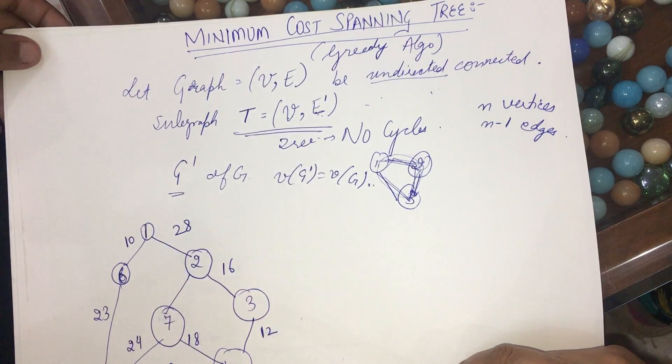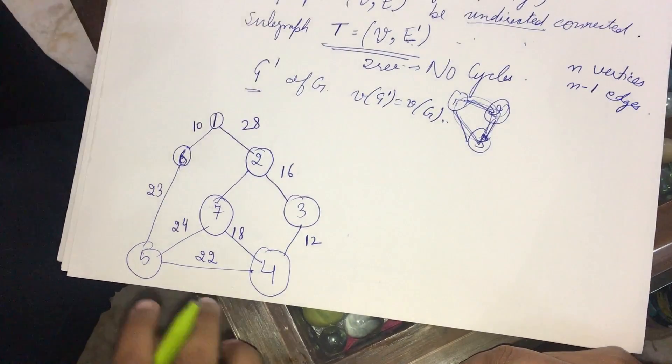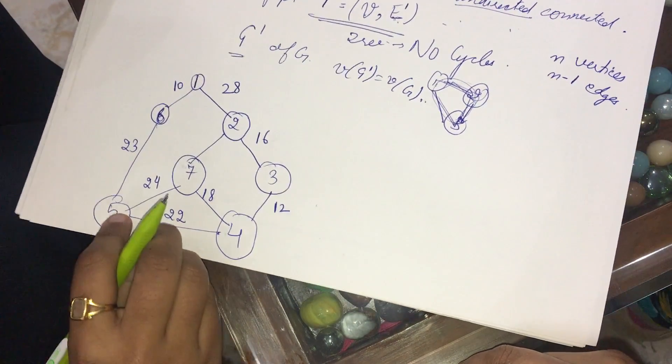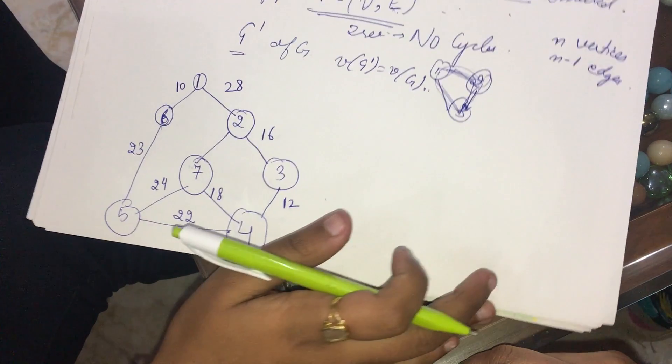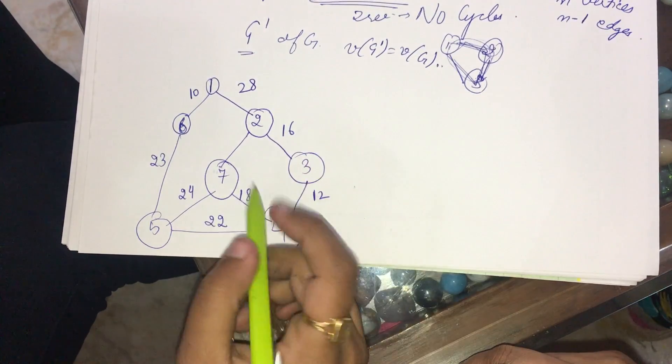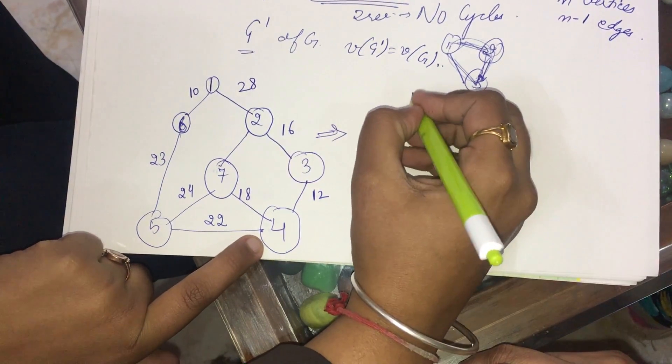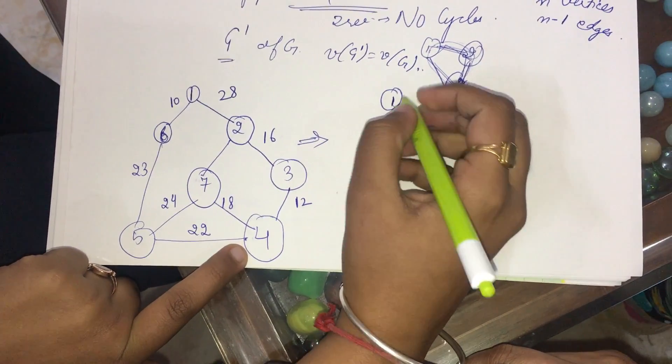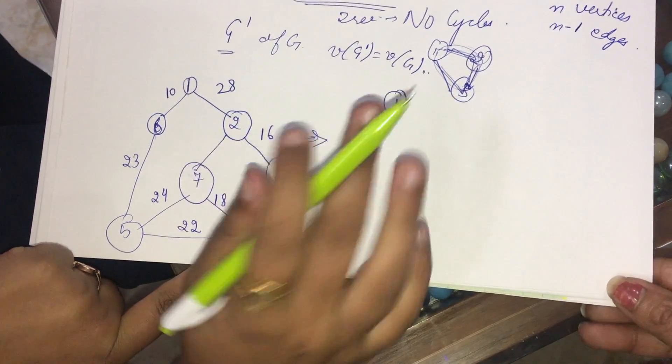I have already constructed a graph over here, and we will find out the minimum spanning tree for it. So what I do? I have to first of all suppose any of the root nodes. The root node can be any. I can take it according to my preference. Suppose I take 1.